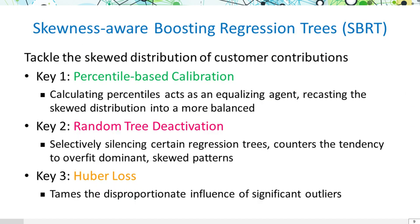We propose Skewness Aware Boosting Regression Trees, or SBRT. It has three novelties. First, we use percentile-based calibration to transform skewed distributions into more uniform ones. Second, random tree deactivation prevents overfitting by disabling some regression trees. Lastly, we employ Huber loss to mitigate the impact of outliers.